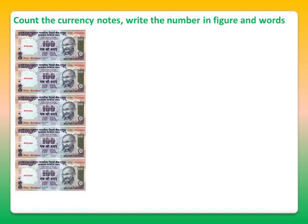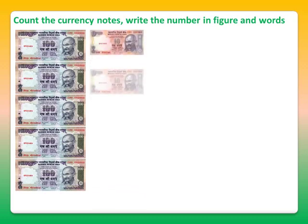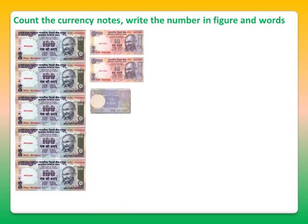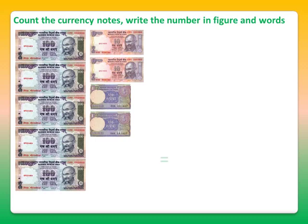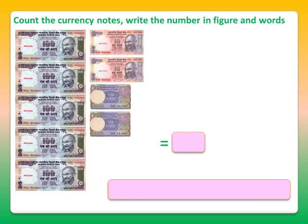Now the tens notes, let's count - it's 1 and 2. 2 notes are there, meaning 20. And let's count the 1 rupee notes. So the value of the notes becomes 522. And in words, we will write 522.